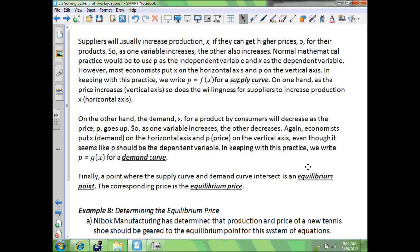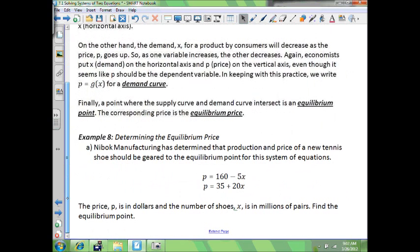Anytime you're in economics, generally you're finding equilibrium prices. You're finding when the supply and demand is at its equilibrium point. So an example here, Nebach Manufacturing has determined that production price of a new tennis shoe should be geared to the equilibrium point for this system of equations. P equals 160 minus 5X and P equals 35 plus 20X. The price P in dollars and the number of shoes X is in millions of pairs. Find the equilibrium point.